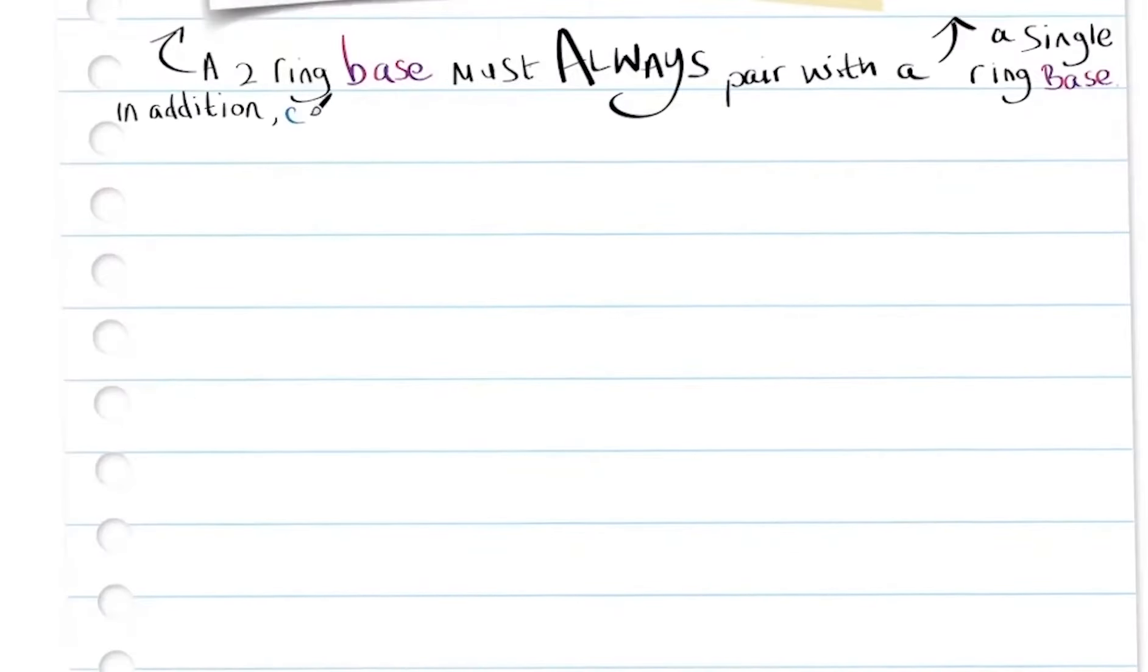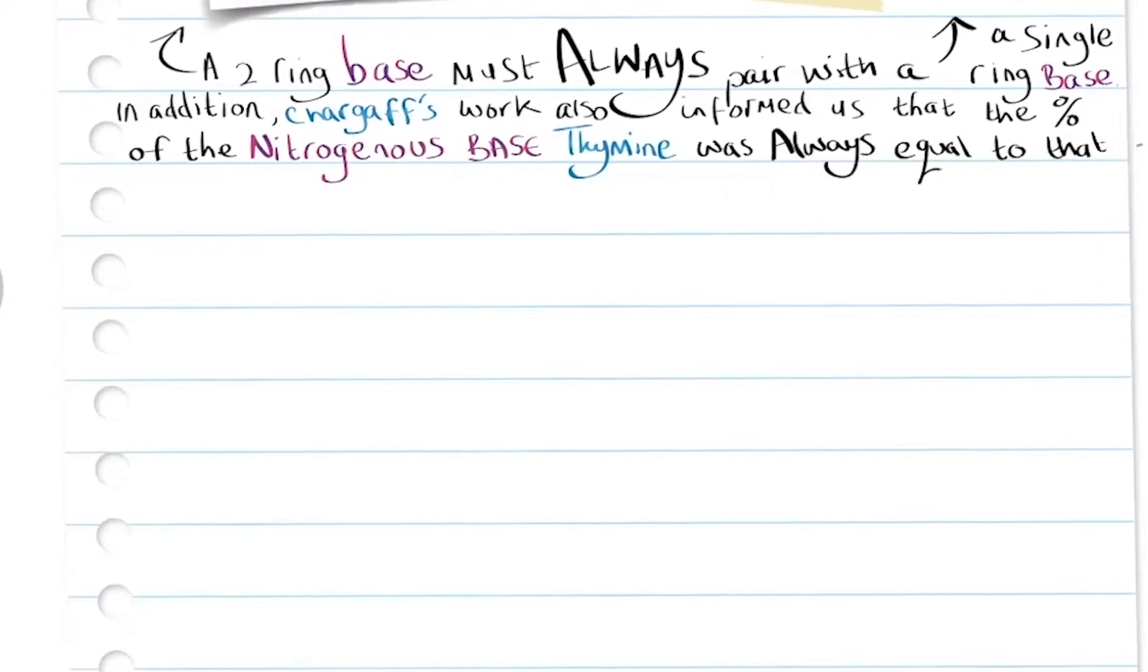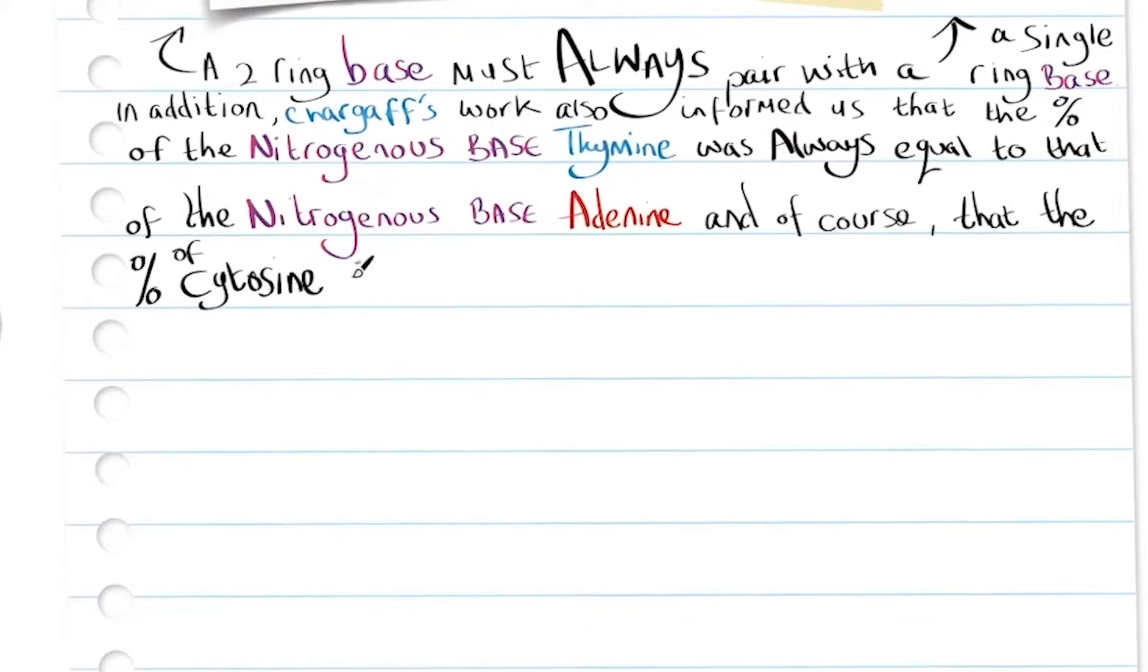In addition, Chargaff's work also informed us that the percent of the nitrogenous base thymine was always equal to that of the nitrogenous base adenine, and of course that the percent of cytosine was always equal to that of guanine.